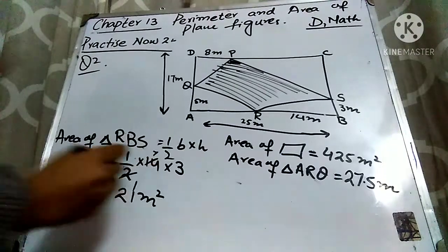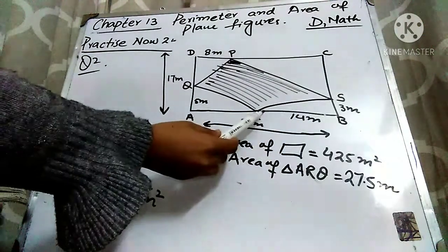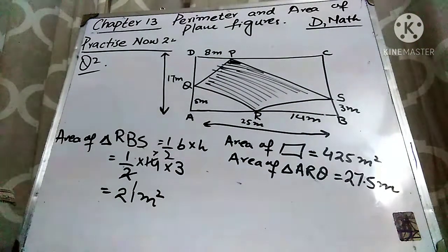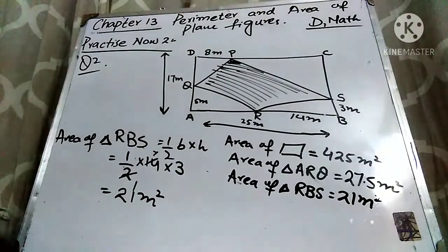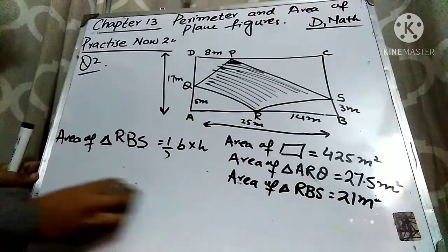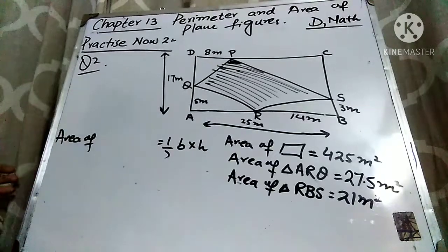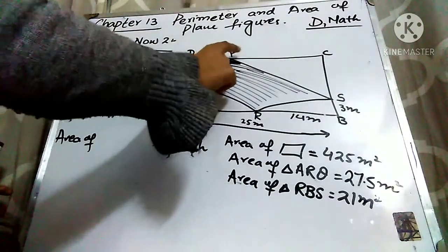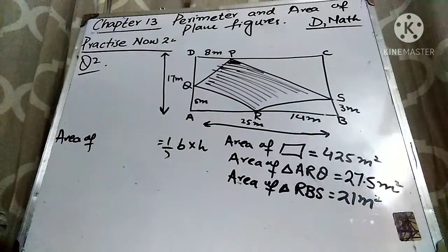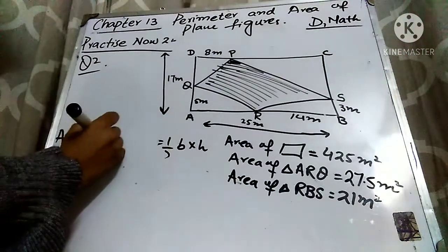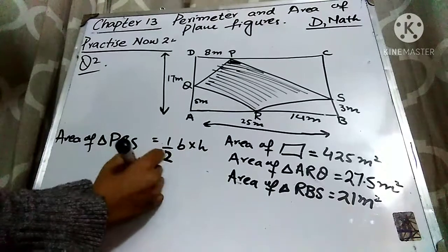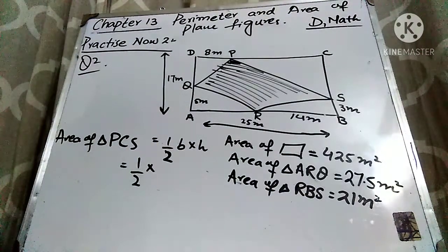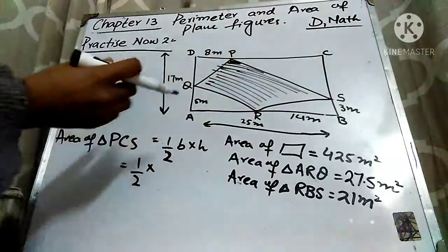Now finding the area of triangle RBS. Formula: ½ × base × height. The base is BR = 14 and the height is BS = 3. So area = ½ × 14 × 3 = 42 ÷ 2 = 21 meters square. Area of triangle RBS = 21 meters square.